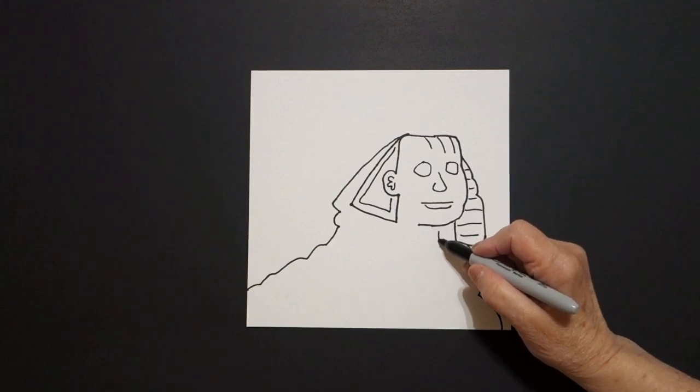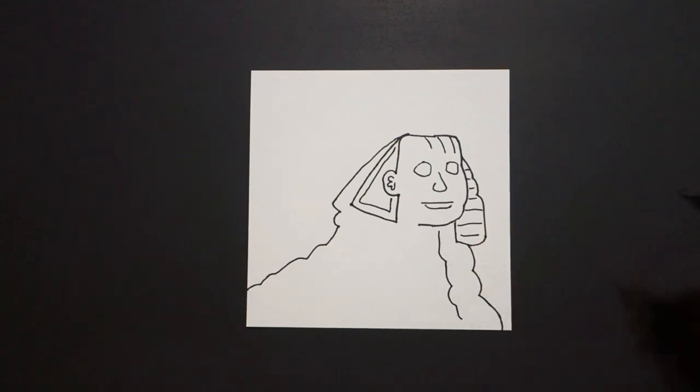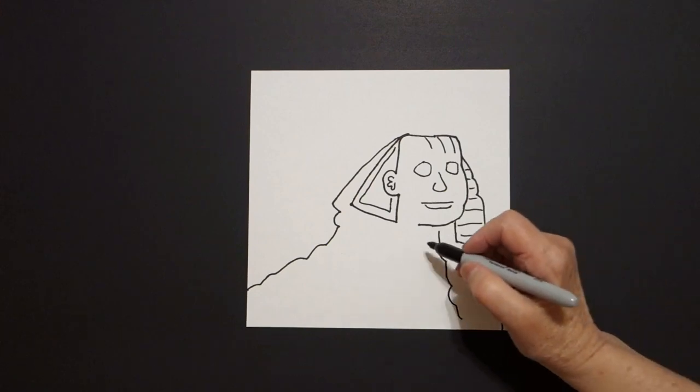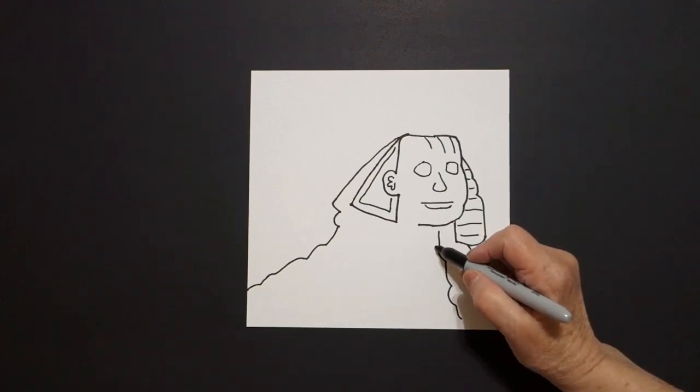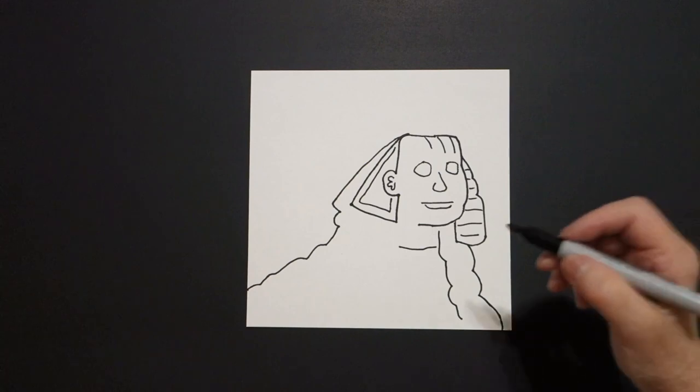Come right about here. We're going to draw a curve line, curve line, curve line, leave it floating. Come back over to the side, little slightly wavy line, I guess.